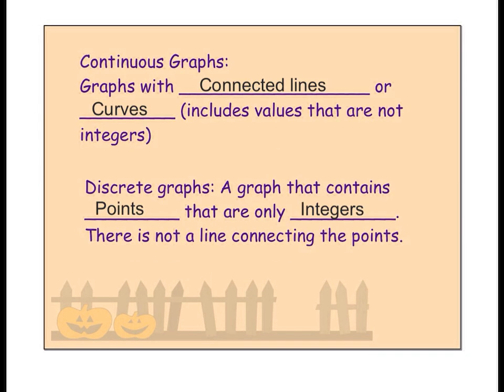A continuous graph, those are graphs with connected lines or curves. That means it includes values that are not integers. Discrete graphs, they are graphs that contain points that are only integers. So, there is not a line connecting the points. That's important.